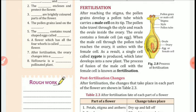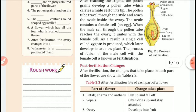As a result, a single cell called a zygote is produced, which later develops into a new plant.